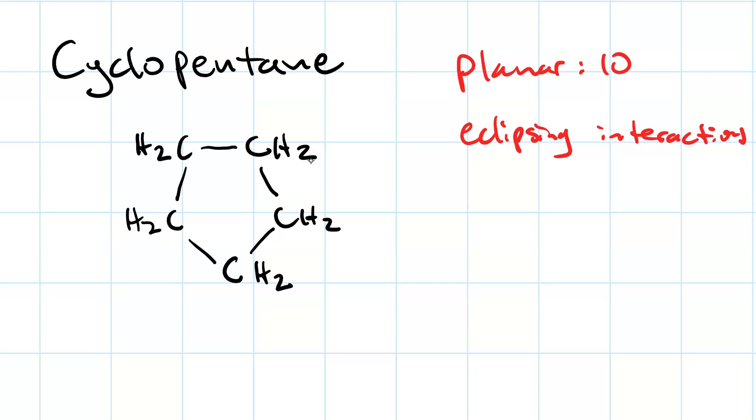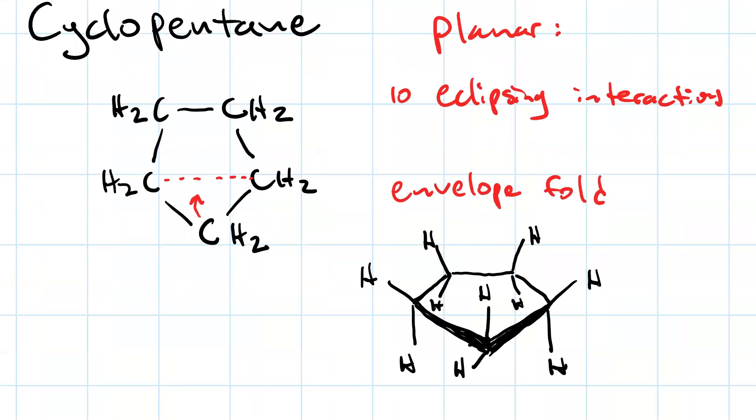What cyclopentane does is adopt an envelope fold, where we take the carbon at the tip of the pentagon and fold it slightly up and out of the plane. Making that slight alteration means these two carbons are no longer eclipsed, nor are these, nor are these, nor are these.